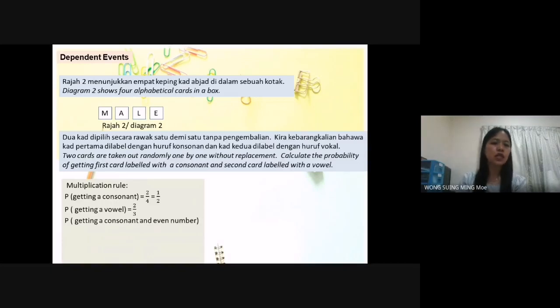Probability getting a consonant and vowel, we multiply it. 1 over 2 multiplied 2 over 3 equal to 2 over 6. Answer is 1 over 3. That is the difference how we solve the independent event and dependent event.